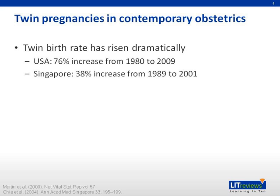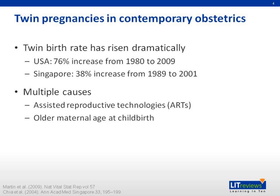It's thought that this is because of two main reasons. One is the use of ARTs, assisted reproductive technologies, such as in vitro fertilization, which are associated with quite a dramatic increase in risk for twin pregnancy. And also, in recent years, there's been a trend towards mothers choosing to have children at a later age, and so an older maternal age is also associated with an increased risk of twin pregnancy.